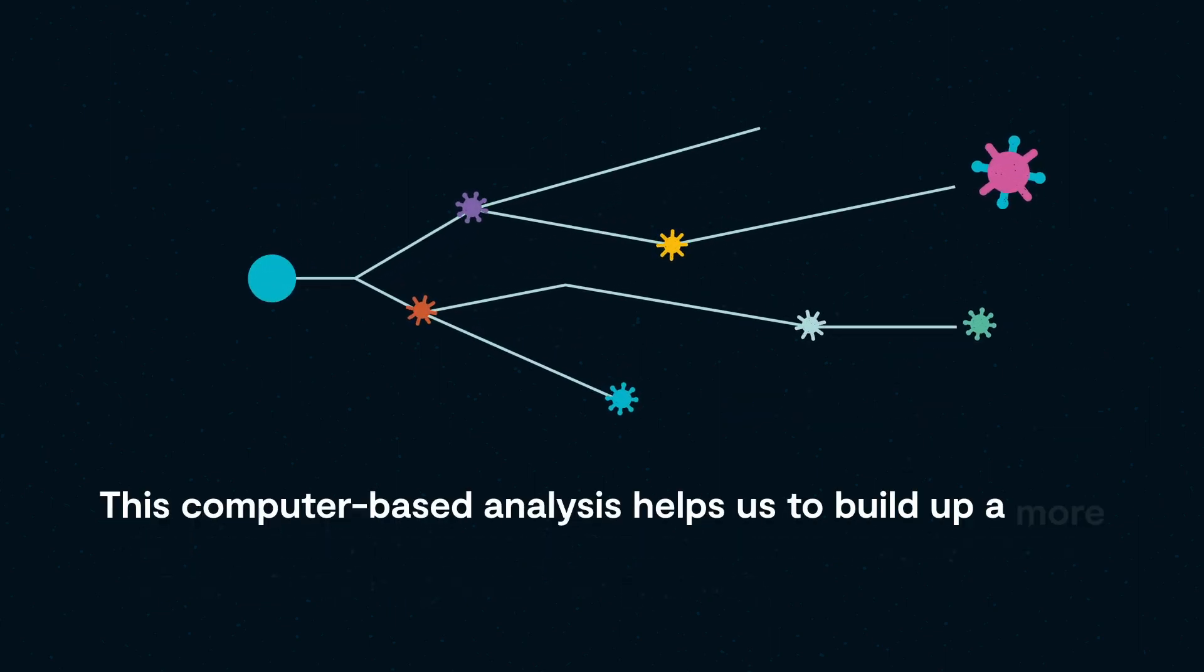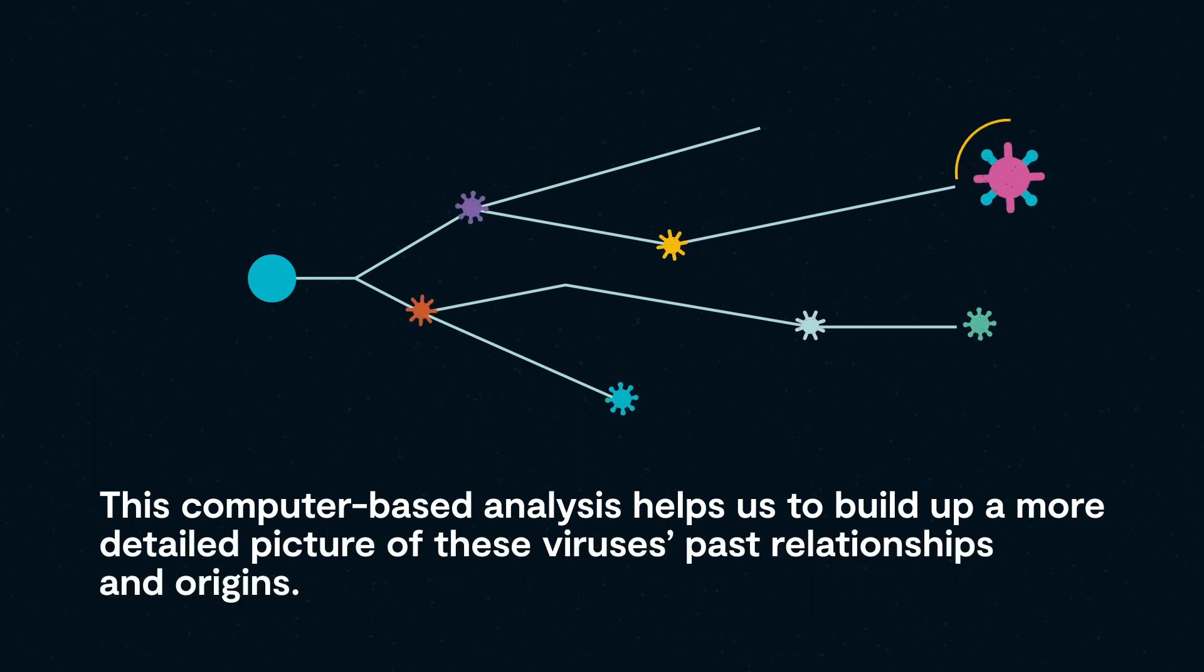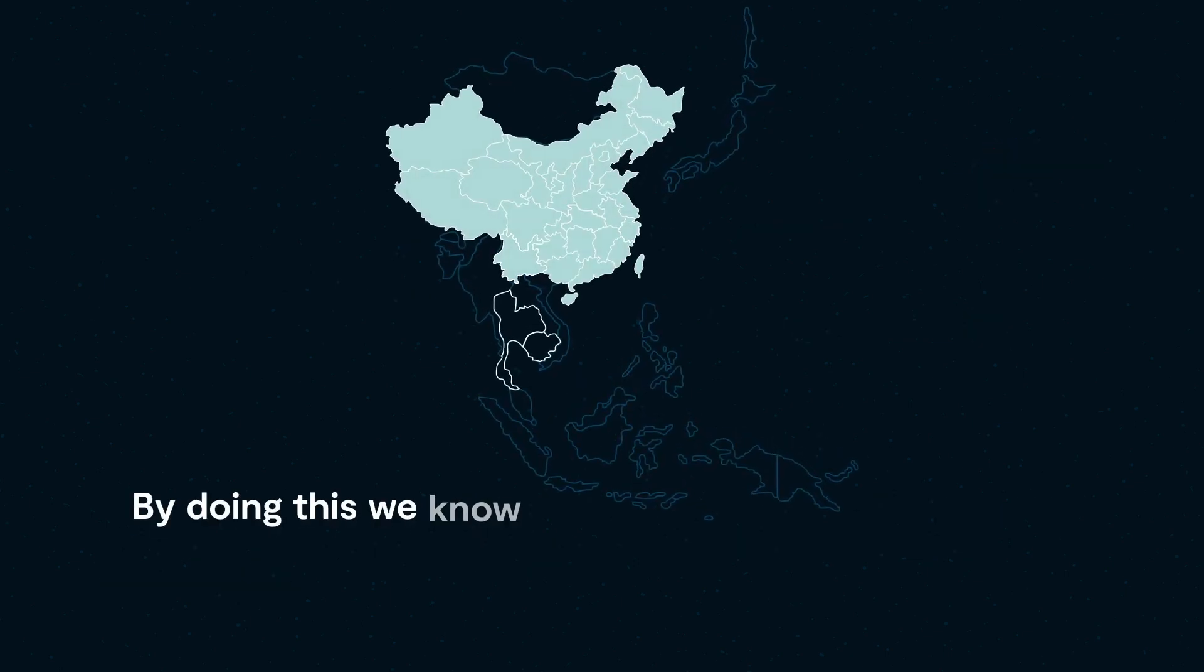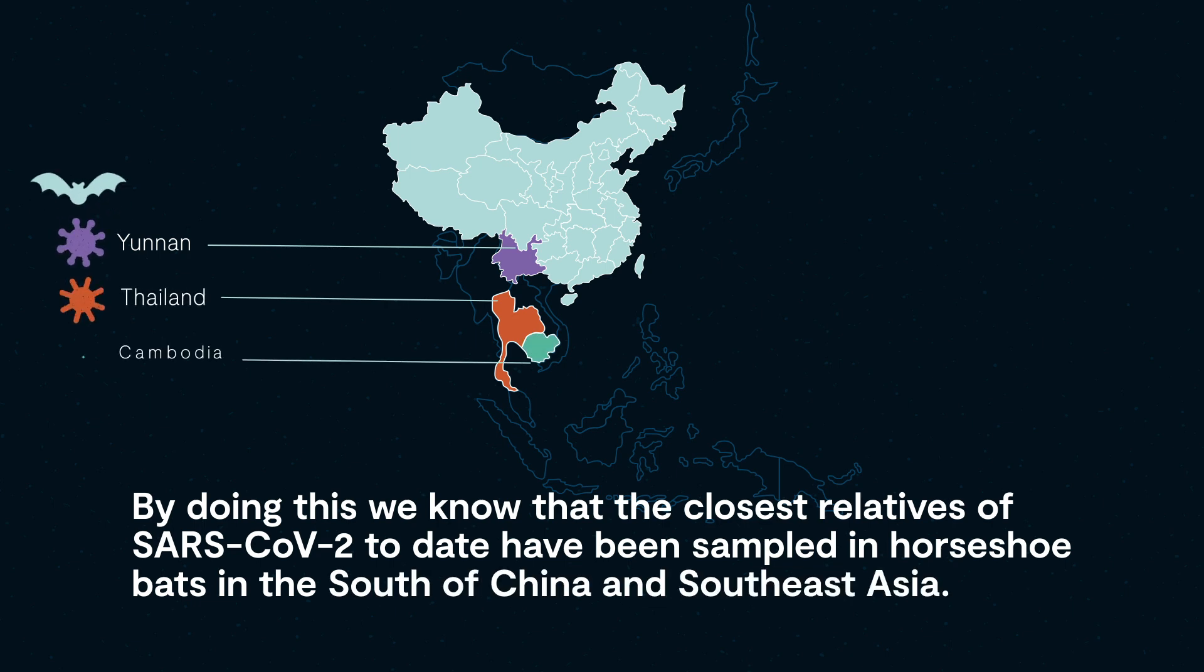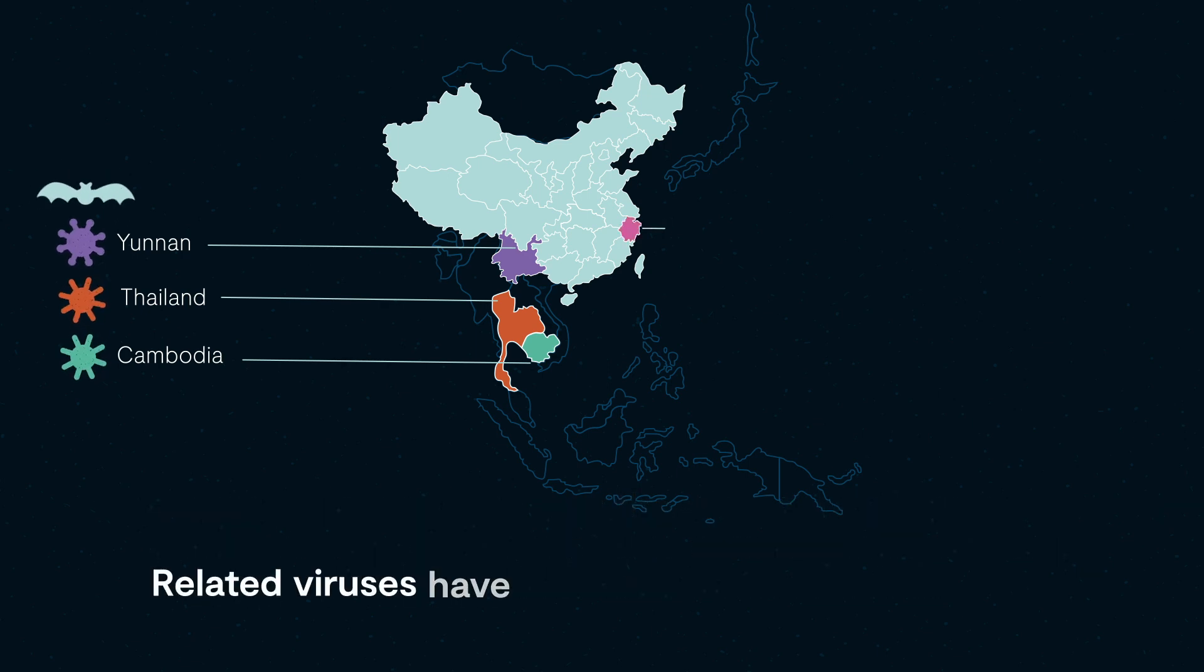This computer-based analysis helps us to build up a more detailed picture of these viruses' past relationships and origins. By doing this, we know that the closest relatives of SARS-CoV-2 to date have been sampled in horseshoe bats in the south of China and Southeast Asia. Related viruses have also been found in East China.